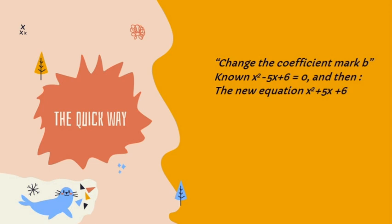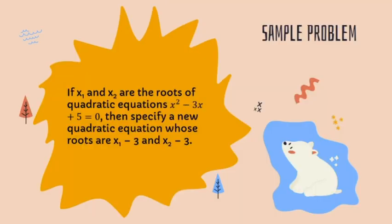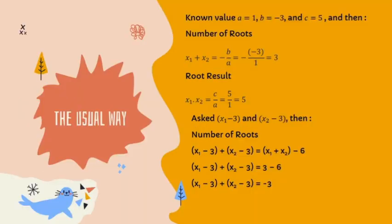So from x² − 5x + 6 = 0, the new equation becomes x² + 5x + 6 = 0. Next example problem: if x₁ and x₂ are the roots of the quadratic equation x² − 3x + 5 = 0, then specify a new quadratic equation whose roots are x₁ − 3 and x₂ − 3. For the usual way, the solution follows the same approach as the first example problem.